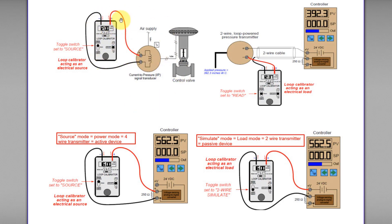This loop calibrator switch is set to source mode. Since it is in source mode, it will act as an electrical source to provide the power to power up the whole loop circuit. Since this one acts as an electrical source, this IP transducer — or current-to-pressure signal transducer — will act as an electrical load. So this loop calibrator not only powers up the whole loop but also at the same time injects a signal.